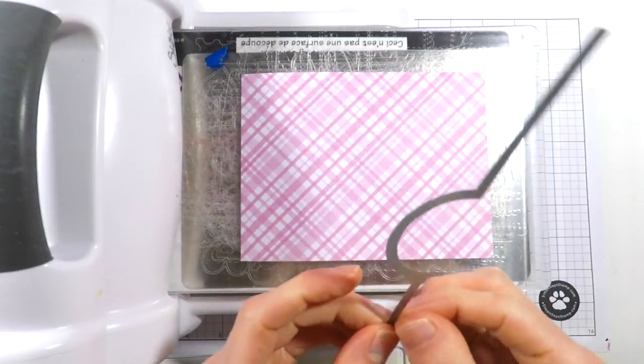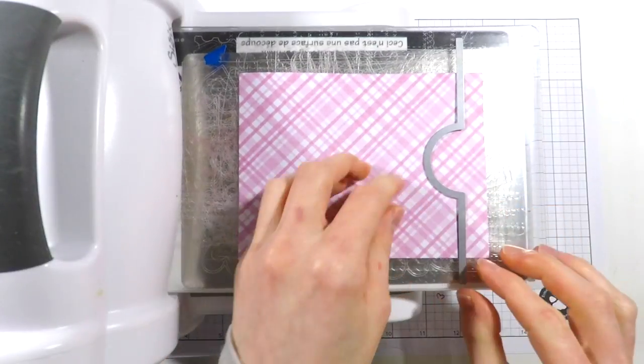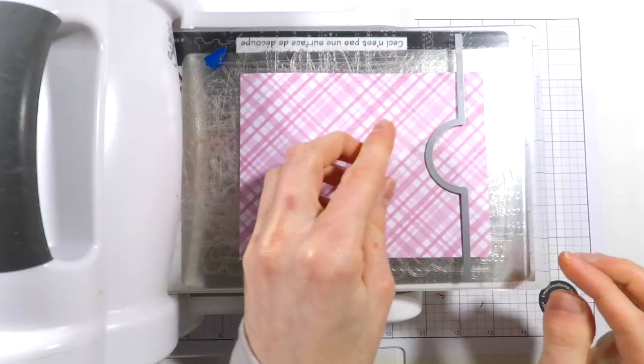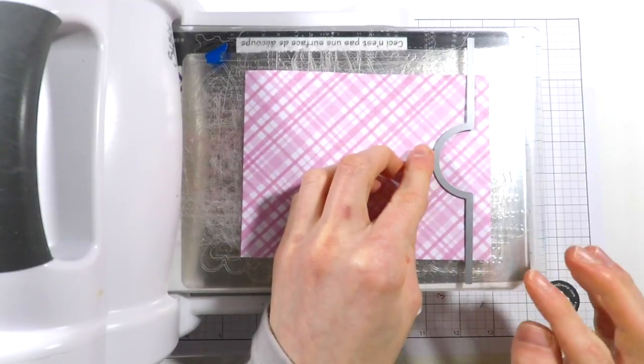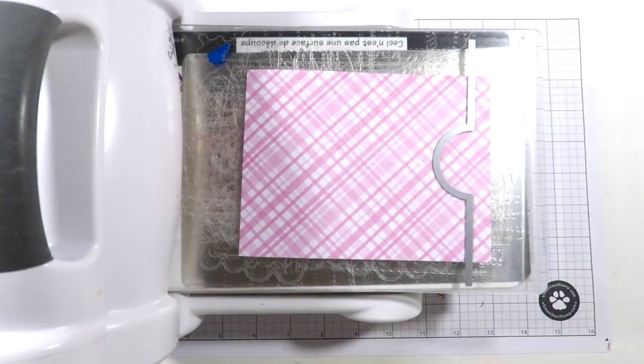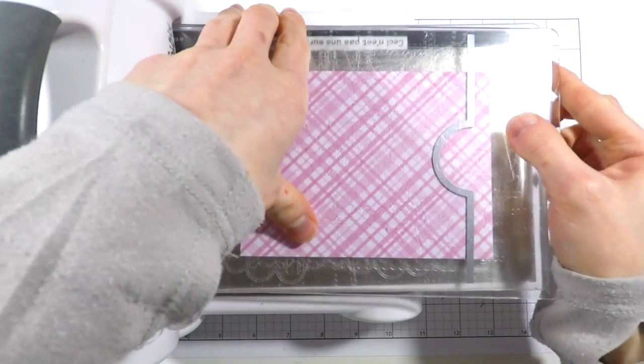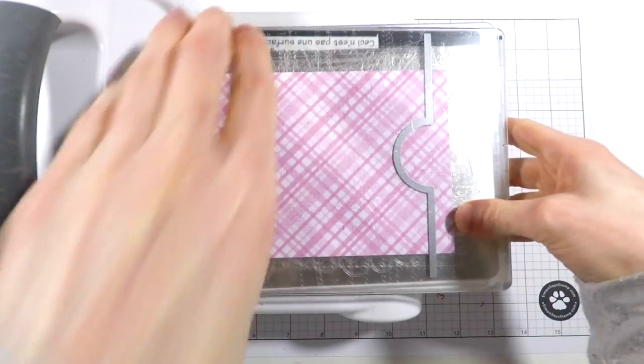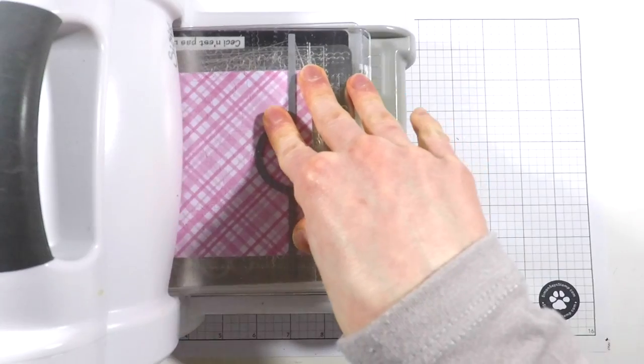I'm going to take this circle notch border die from Memory Box and I'm going to line this up on the opposite end of the fold, so I'm basically putting it down to where the bottom of the card would be. I'm going to line that up in my Big Shot and carefully lay my cutting plate back on top and run this through.